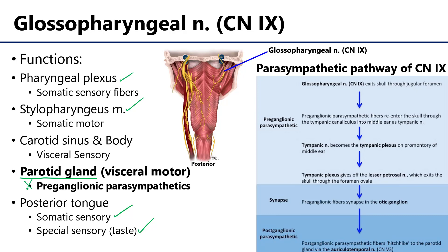Specifically, nine is providing the preganglionic parasympathetic fibers, which are going to be instrumental in the beginning of this pathway to the parotid gland. So let's take a look at this pathway. I'll go through it rather quickly now and again at the end of the video after we've taken each step in granular detail.